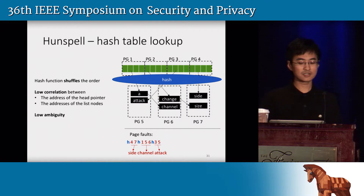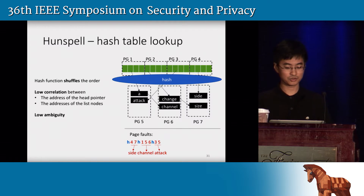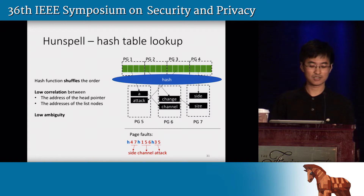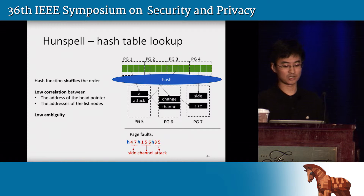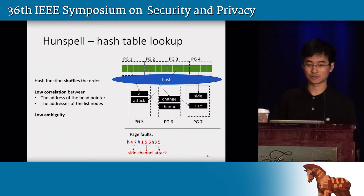The key of this attack is the hash function. The hash function is supposed to shuffle the word in an order that appears random, and it has very low correlation with the word in the linked list. As a result, we get very low ambiguity in our attack results.